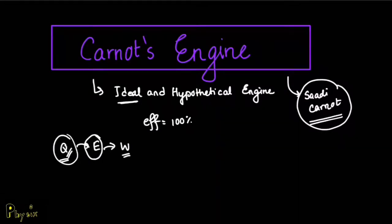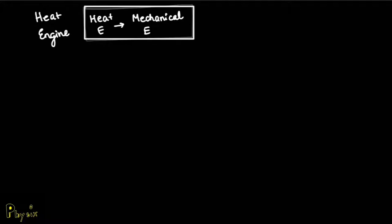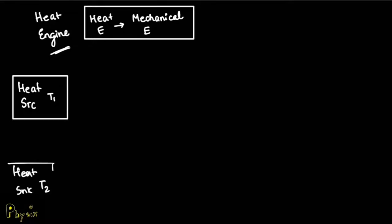Let us first know how this Carnot's engine actually works. A Carnot's engine is basically a heat engine that converts heat energy into mechanical energy. Since this is a heat engine, it works between a heat source at temperature T1 and a heat sink at temperature T2.